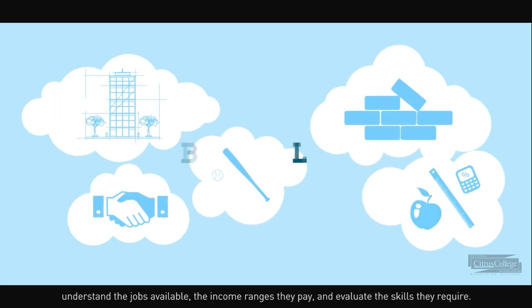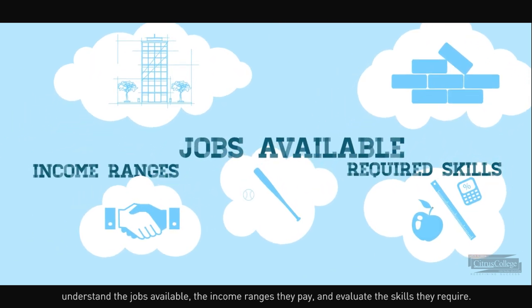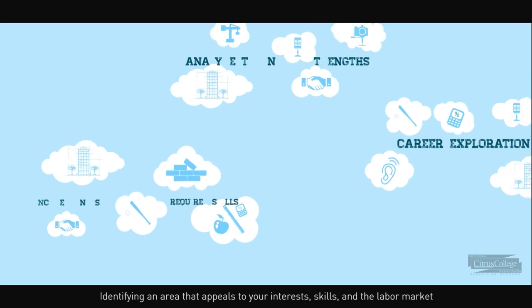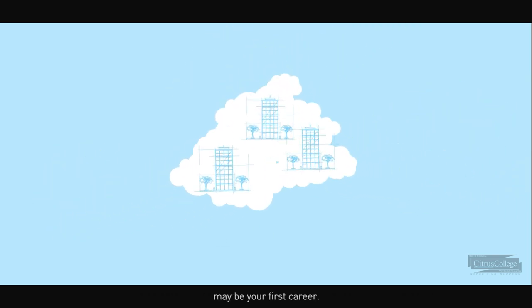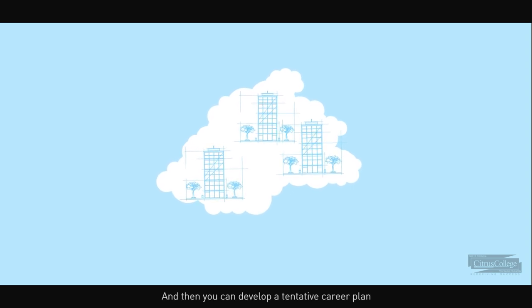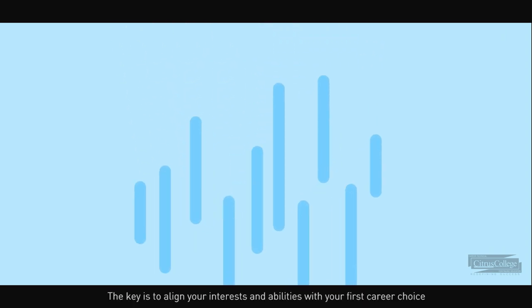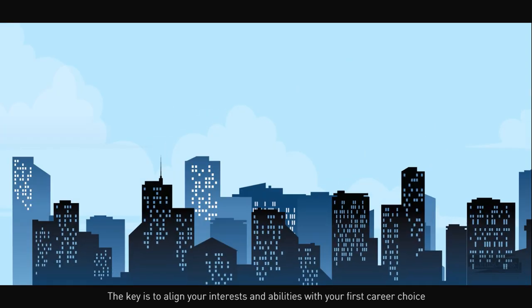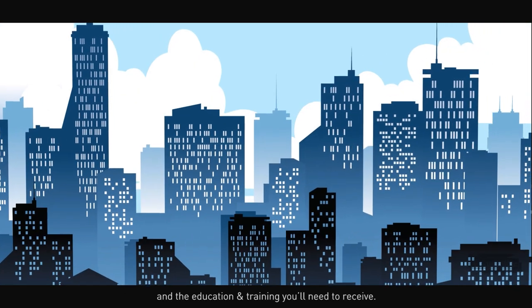Step two is career exploration. Understand the jobs available, the income ranges they pay, and evaluate the skills they require. Identifying an area that appeals to your interests, skills, and the labor market may be your first career, and then you can develop a tentative career plan, complete with multiple training and education options. The key is to align your interests and abilities with your first career choice and the education and training you'll need to receive.